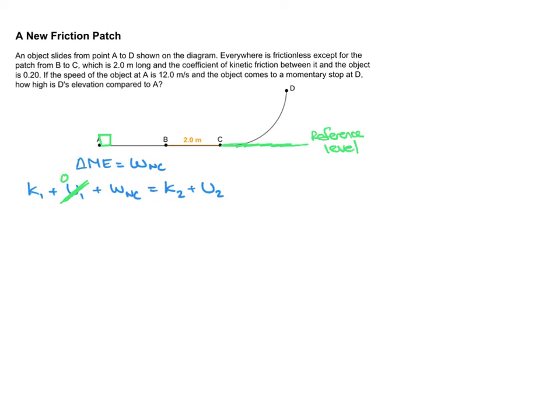Another zero is coming from this fact that it's going to come to a momentary stop at point D. So at the very end of this journey, it reaches point D and it just comes to a rest there. So that means it does not have kinetic energy at that point. So I'll be crossing out K2, the final kinetic energy.